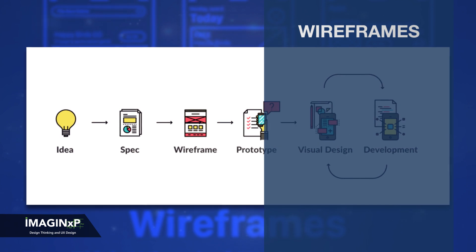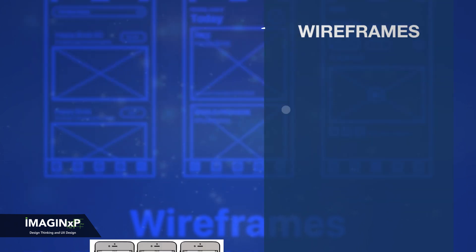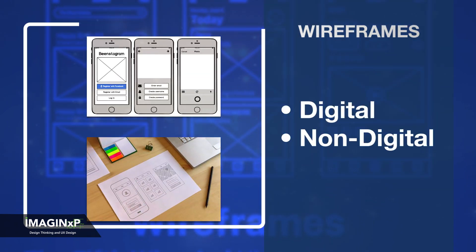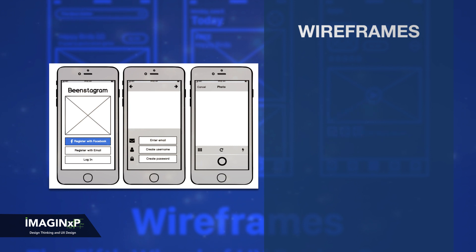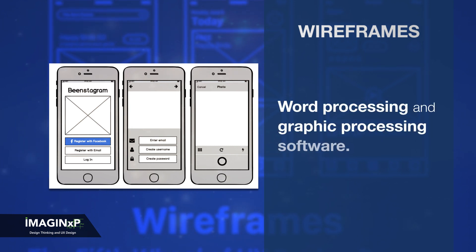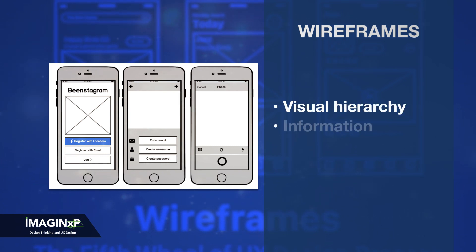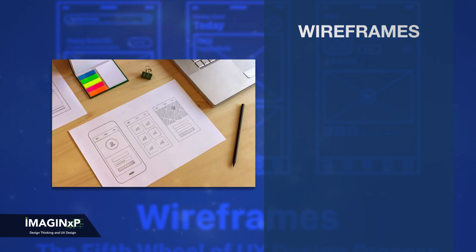Two wireframe methods are digital and non-digital. Digital includes word processing and graphic processing software. These are detailed wireframes which define the visual hierarchy, information flow, and all interactions in detail.